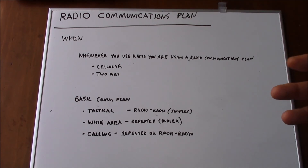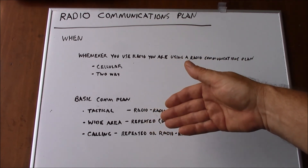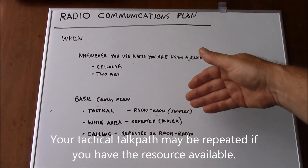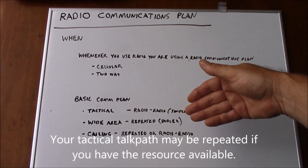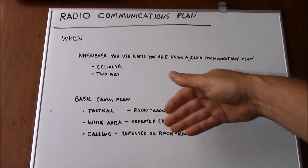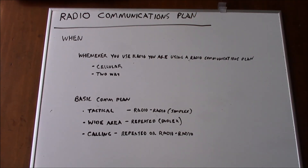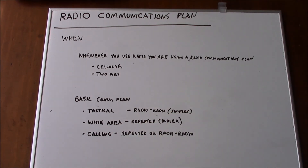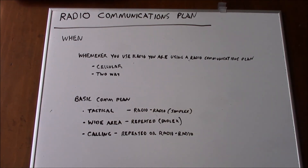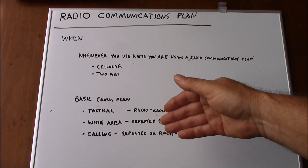When would you use your radio communications plan? Essentially, whenever you use your radio, you're using a radio communications plan — whether that be cellular or two-way radio. The most basic communications plan has three elements: a tactical talk path, which is radio to radio simplex; a wide area talk path, which is repeated or duplex; and a calling path, which is how people from outside your radio net can contact you. What you'll find is that those three basic building blocks will establish the foundation of your communications plan.